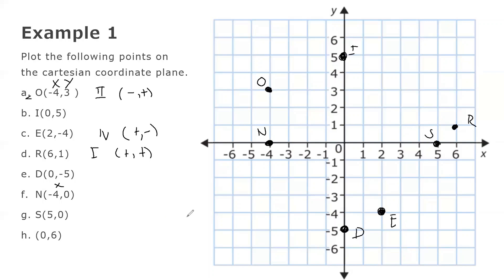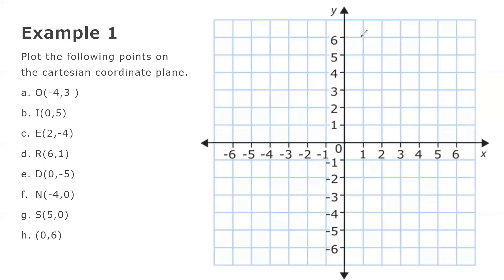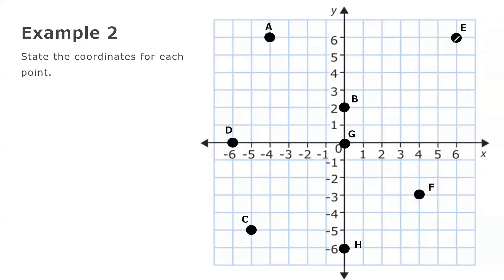The last point is at (0, 6), plotted on the positive y-axis. That is how you plot points on a Cartesian coordinate plane.